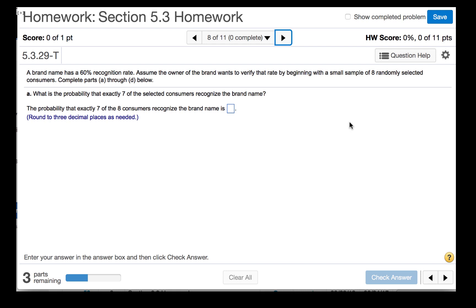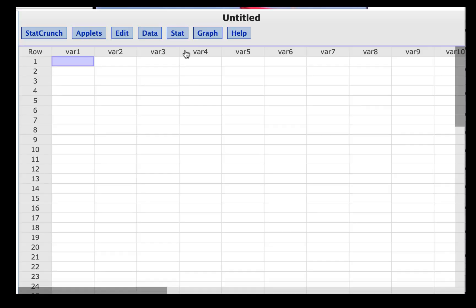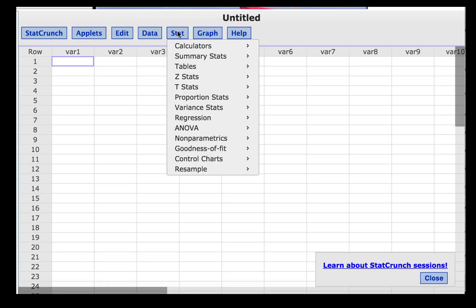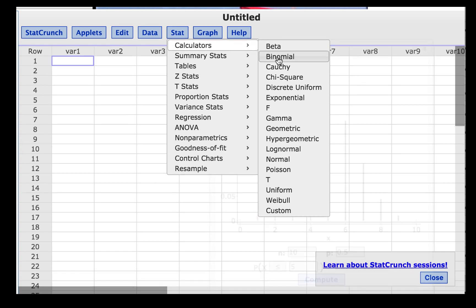So in order to find the probability that exactly 7 of the 8 consumers recognize the brand name, we will use the binomial calculator in StatCrunch. We will click Question Help, StatCrunch. Then we will click Stat, Calculators, Binomial.